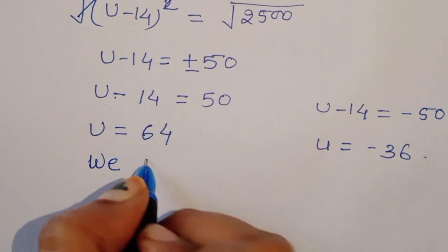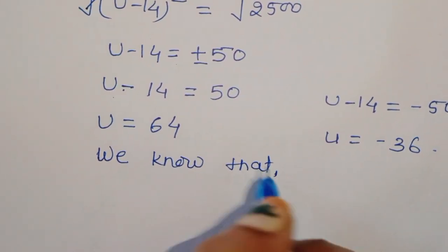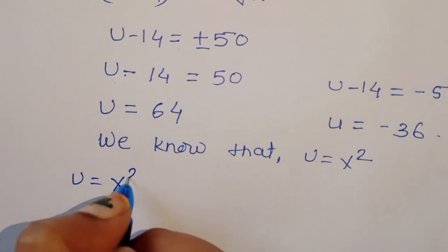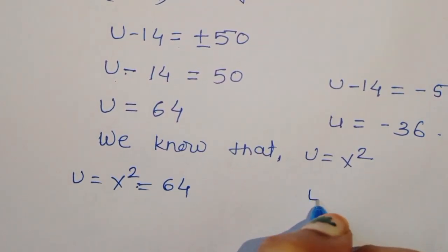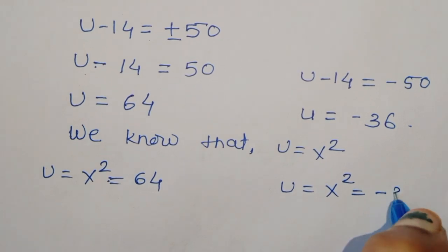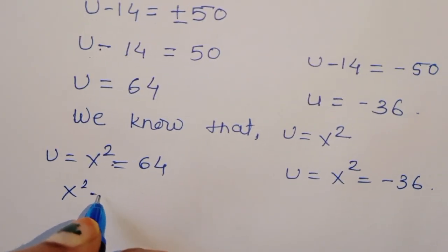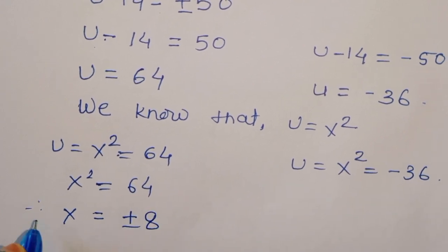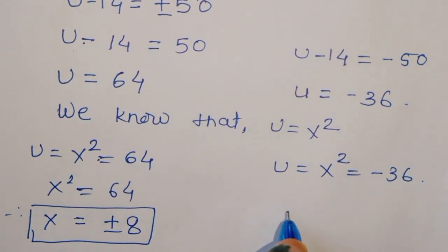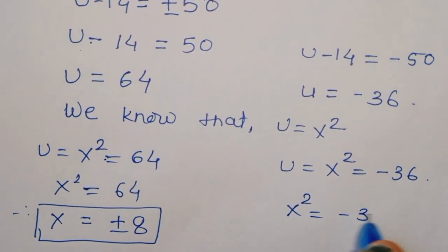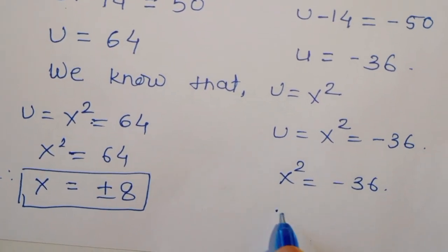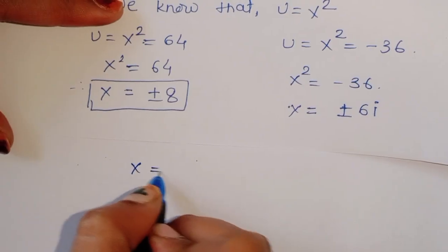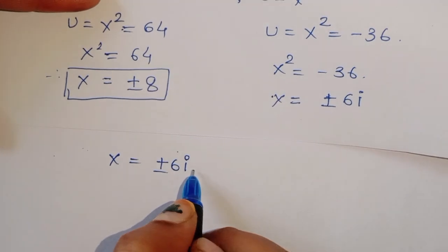Since we defined u = x², we have x² = 64 or x² = -36. From x² = 64, we get x = ±8. From x² = -36, we get x = ±6i, which is an imaginary number.